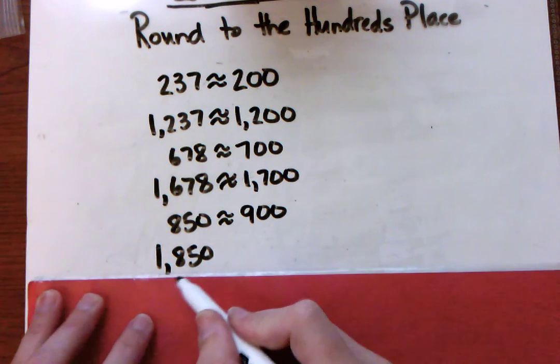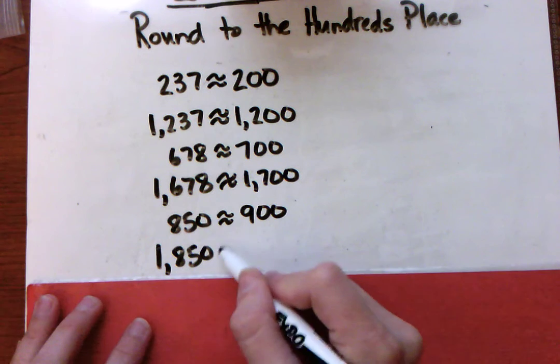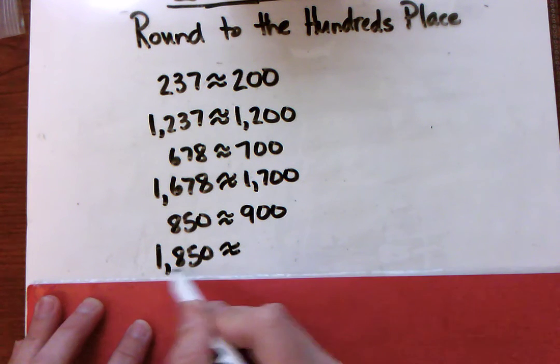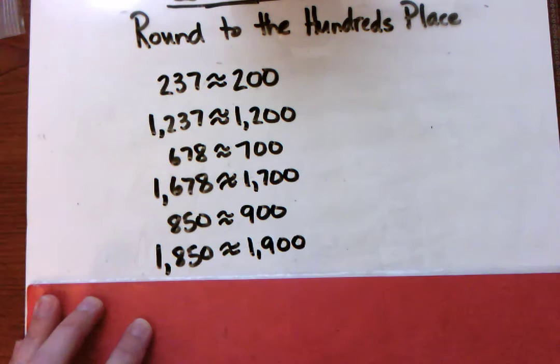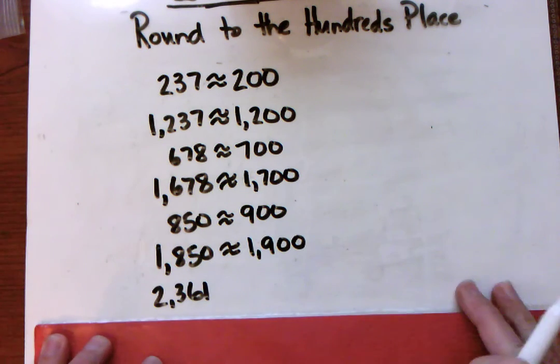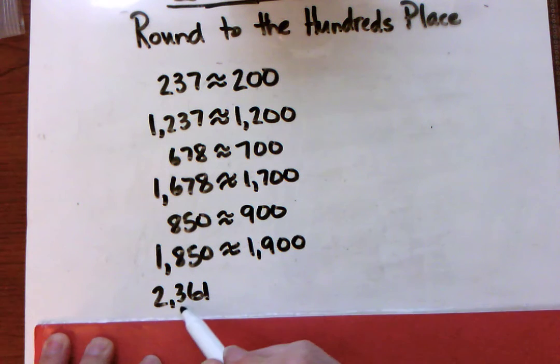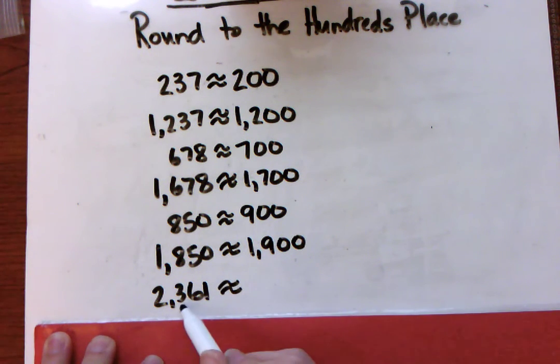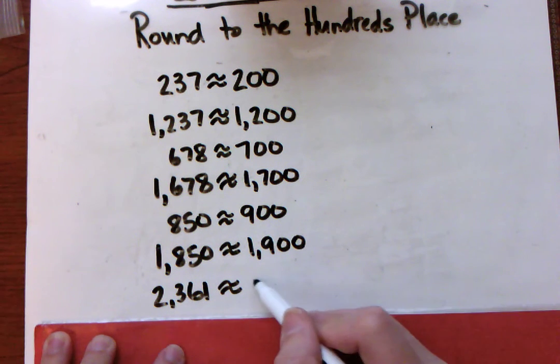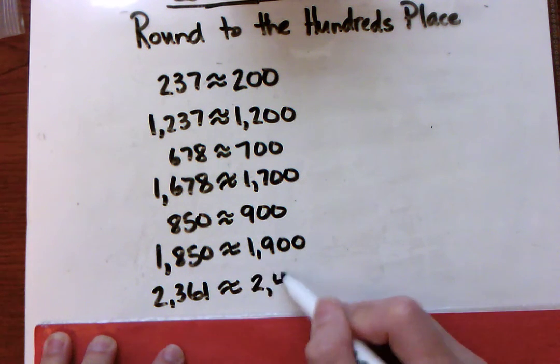One thousand eight hundred fifty rounded to the hundreds place is one thousand nine hundred. Two thousand three hundred sixty-one rounded to the hundreds place is two thousand four hundred.